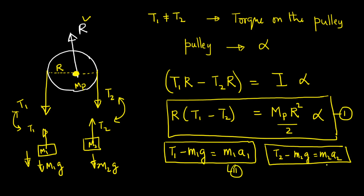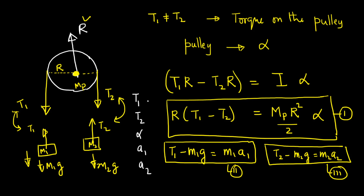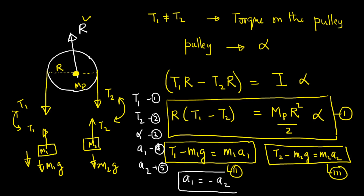That's equation three. Now let's count the unknowns: T1, T2, alpha, a1, and a2 — five unknowns, but only three equations so far. A fourth equation is easy and the same as done previously: a1 = −a2, because if one is positive the other is negative, respecting the sign convention. Now with one more equation we are done.